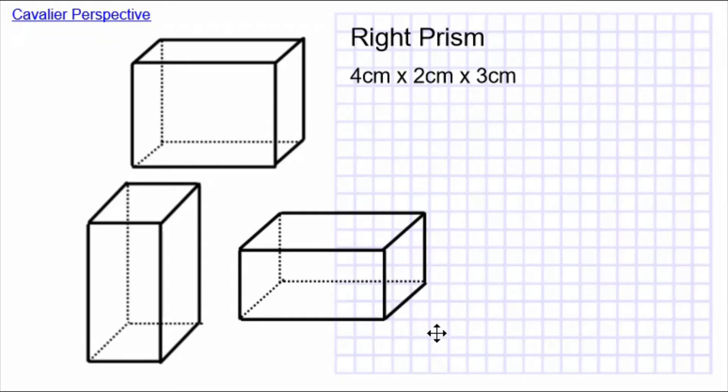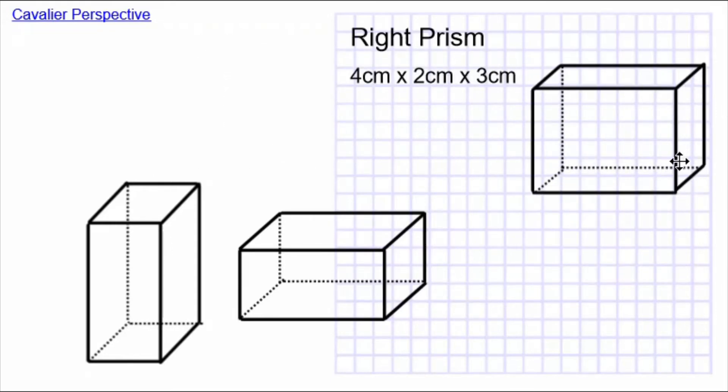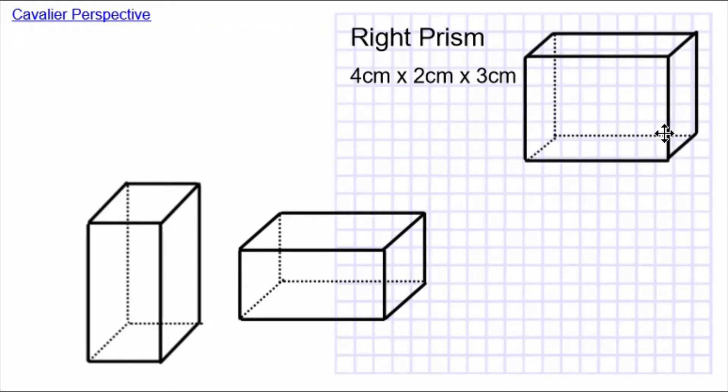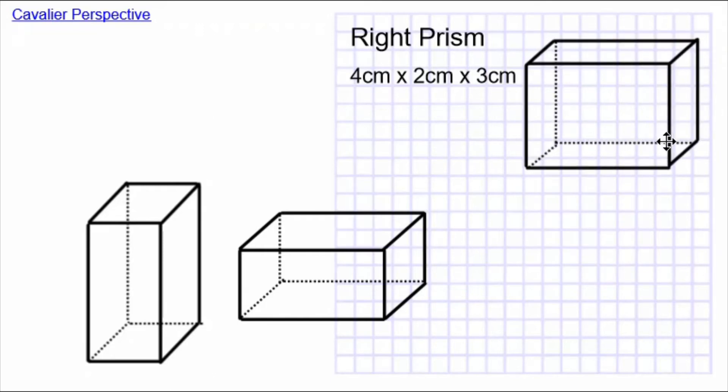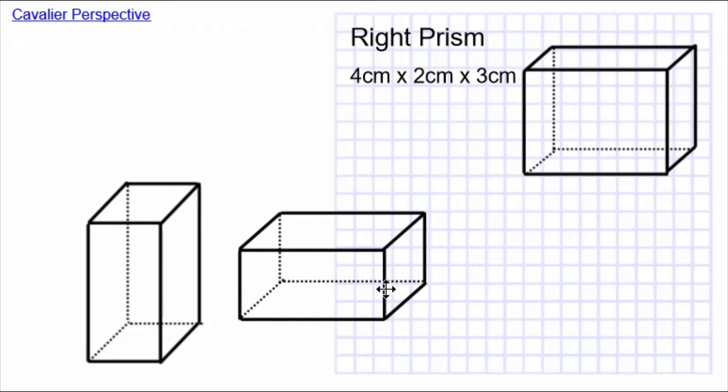So which face is on the bottom changes what it looks like when you draw it. All three of these are valid Cavalier perspective drawings of this right prism. Let's put them all in the graph paper.